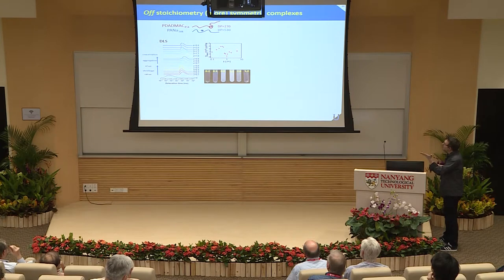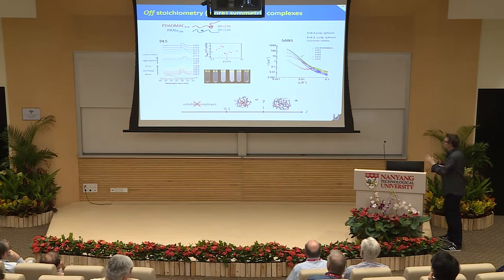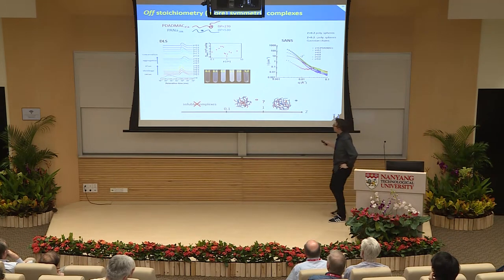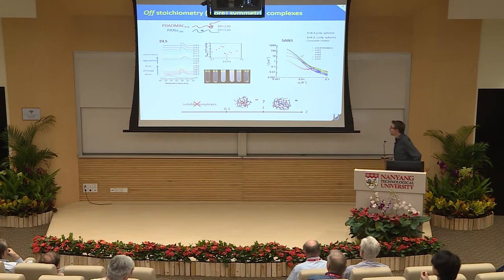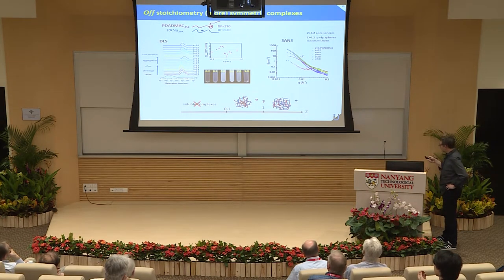If we change the asymmetry — using two equivalent molecular weights — it's a completely different story. We still have an insoluble object, but the soluble complex region doesn't show up anymore. This is really linked to the fact that we are using a large length-scale asymmetry.